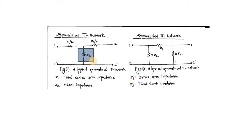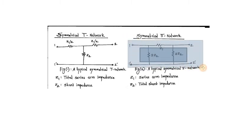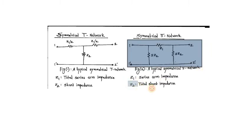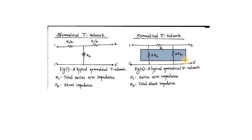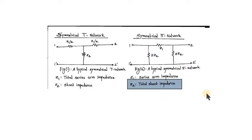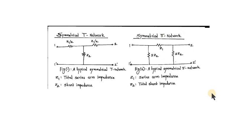The impedance Z2 is called the shunt impedance, as it is connected in shunt as far as the pattern of the network is concerned. Similarly, two impedances each of value twice Z2 are connected in shunt with each other. We call Z2 the total shunt impedance because twice Z2 in parallel with twice Z2 is ultimately equivalent to only Z2.